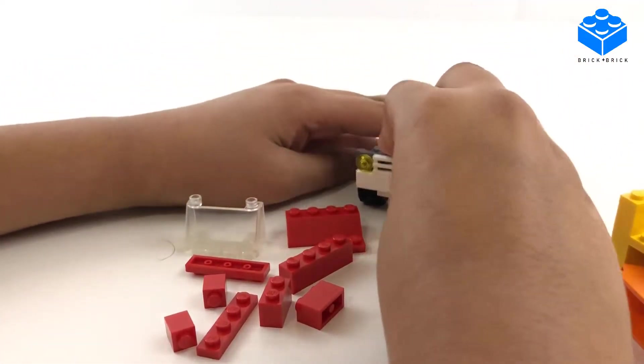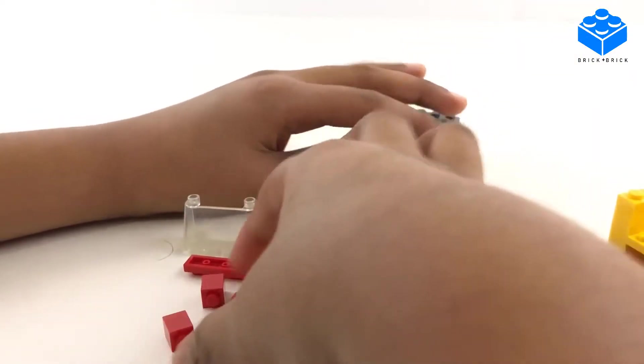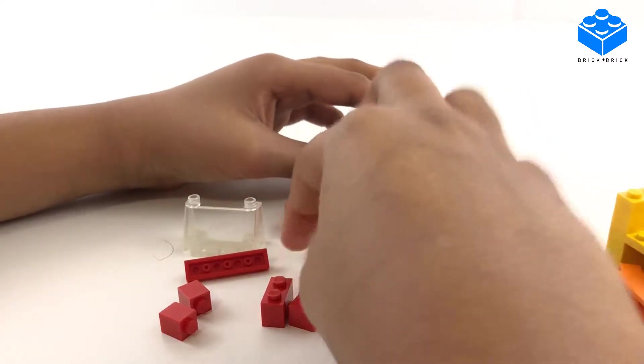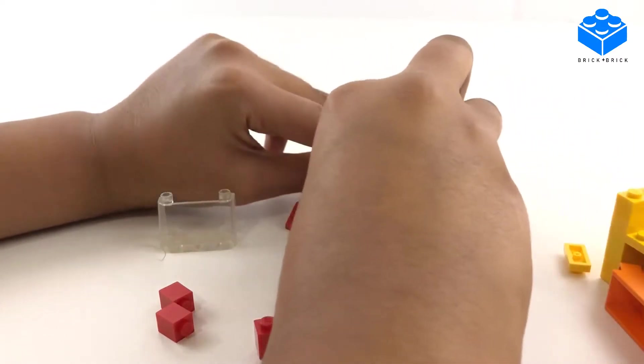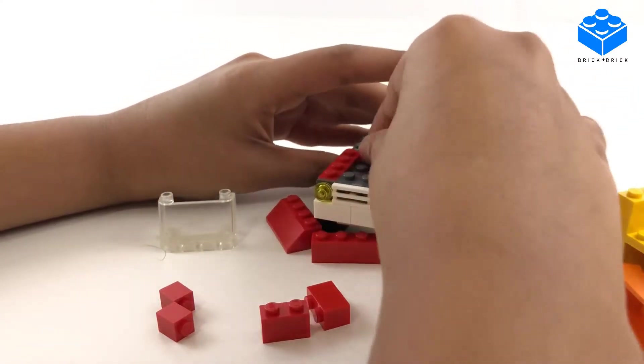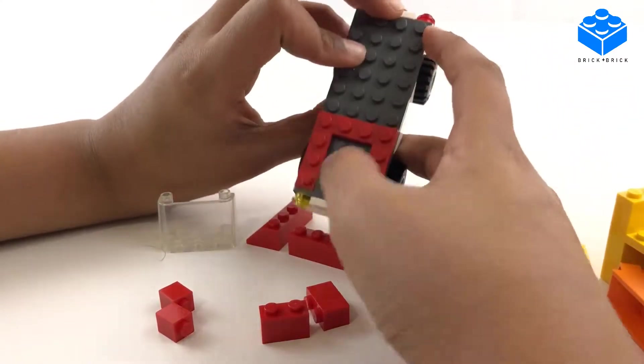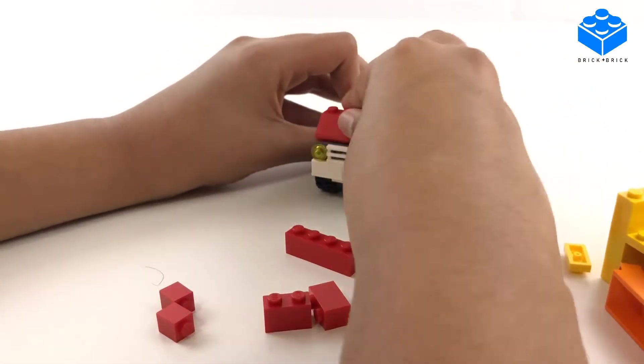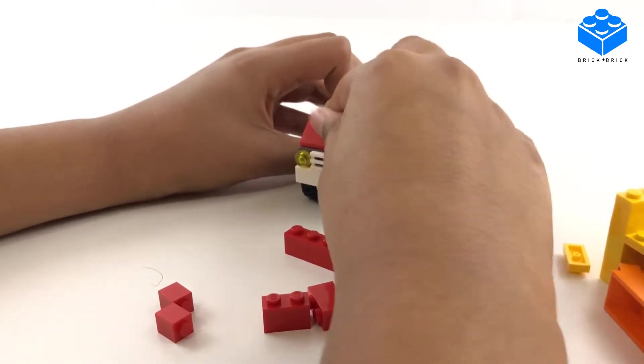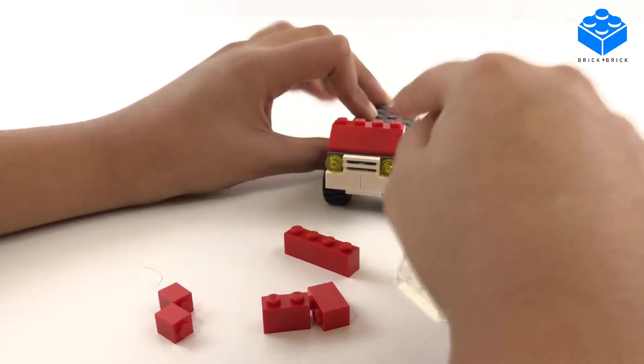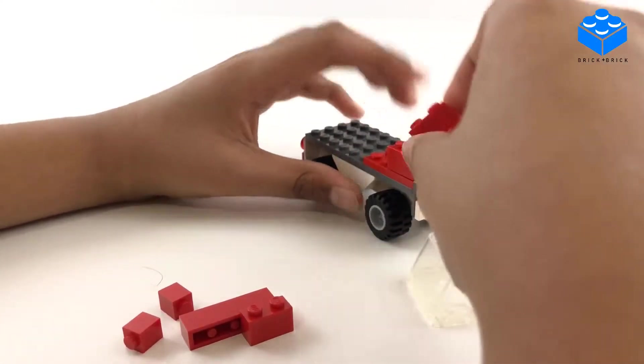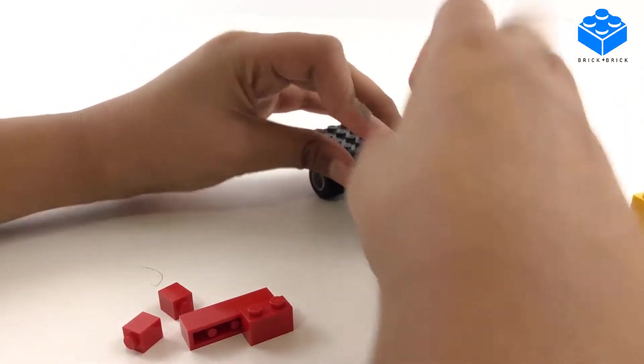So first you need to use the front bumper, which is our bracket. Then we need to place these flat pieces down in a square shape so that there's a two by two space in the middle. Then we should place the two by four slope piece right here and then we can add these one by twos over here.